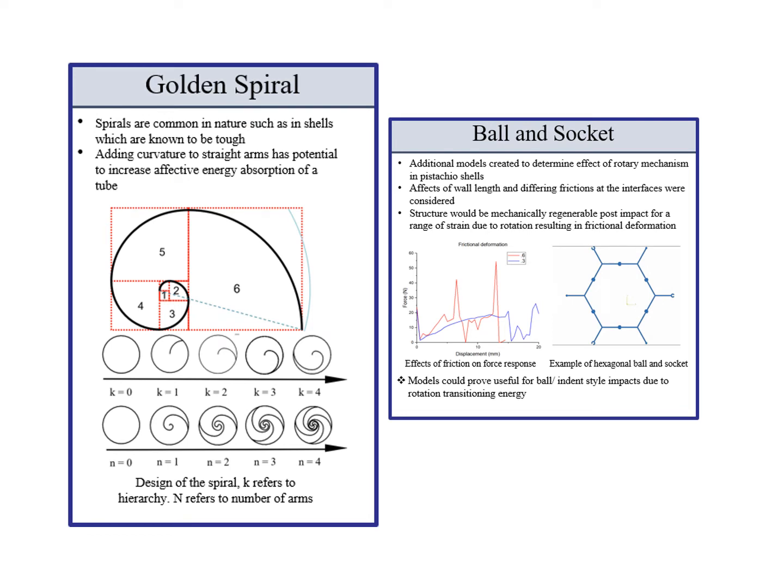The ball and socket consists of puzzle pieces which are interlocked. When these pieces are compressed they allow for rotation which absorbs energy. This is non-permanent so this structure can be reused if non-excessive deformation is seen.